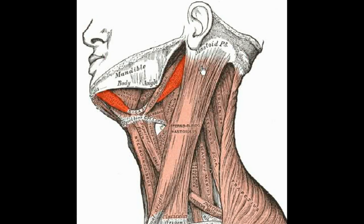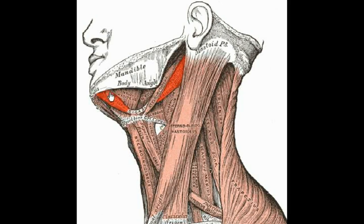Here we're looking at the digastric muscle. It originates on the mastoid process of the temporal bone and attaches at the mandible via a pulley tendon on the hyoid bone. Its primary action is depression of the mandible. So it works in conjunction with the masseter and temporalis — they elevate the mandible, and the digastric depresses the mandible.